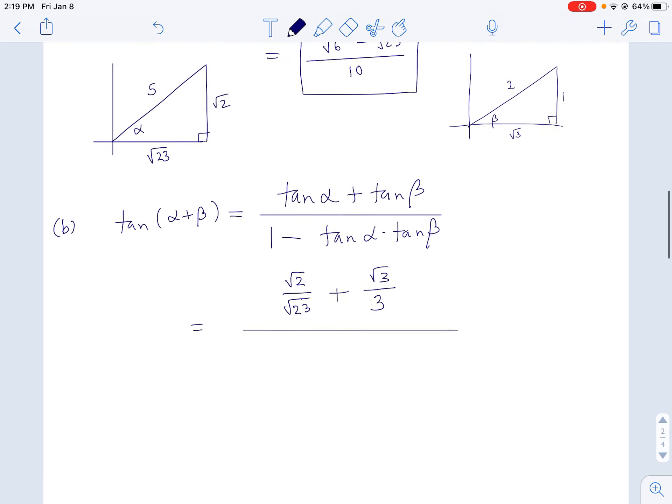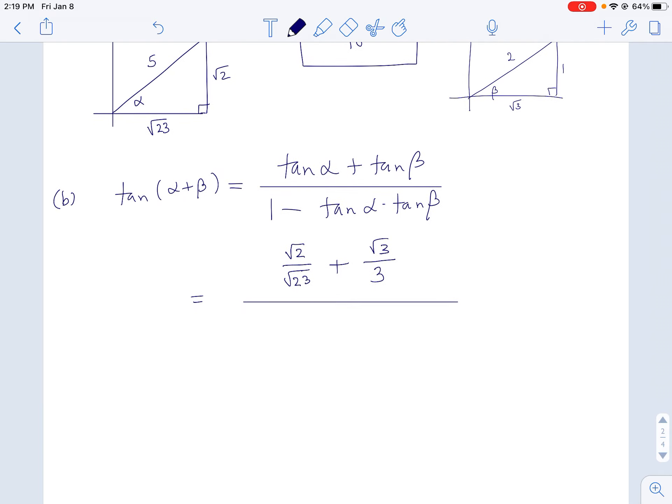Okay. And then on the bottom of this fraction, I have 1 minus tan alpha tan beta. So I got 1 minus tan of alpha was root 2 over root 23, and tan beta would be root 3 over 3.